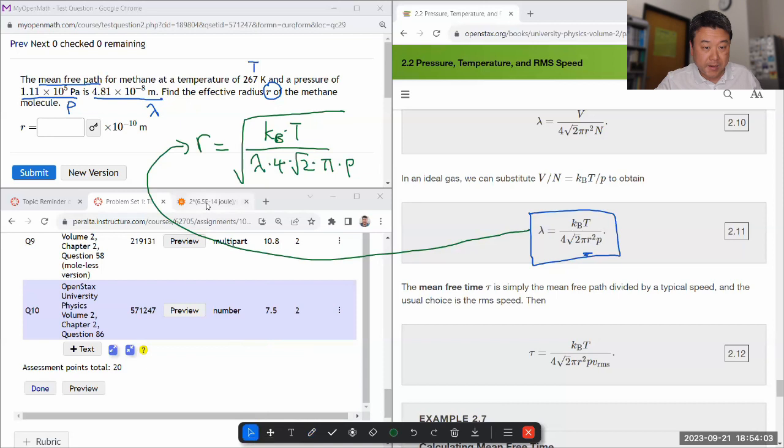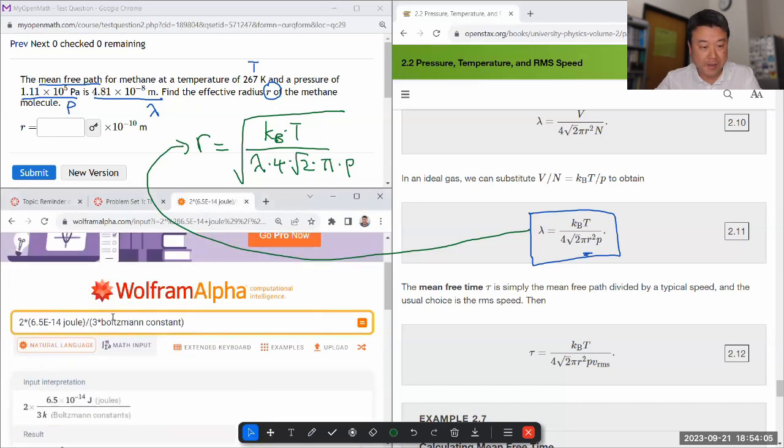I think that's a formula I can plug into Wolfram Alpha. I have all the numbers, all I have to do is type it in: Boltzmann constant times temperature, so 267 Kelvin, divide by mean free path 4.81 times 10 to the power of minus 8 meters, times 4 times square root of 2 times pi times pressure 1.11 times 10 to the power of 5 Pascal, square root closed.